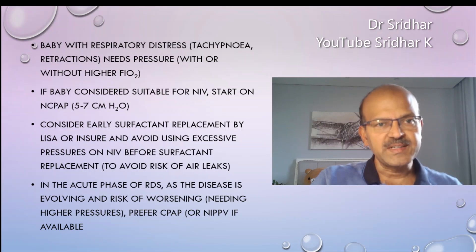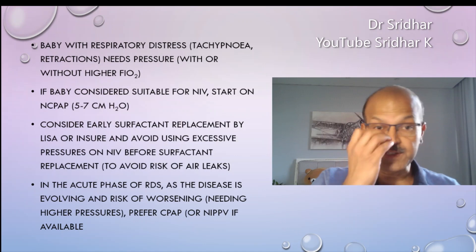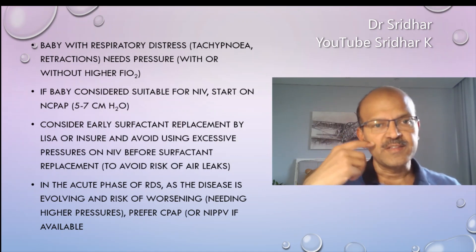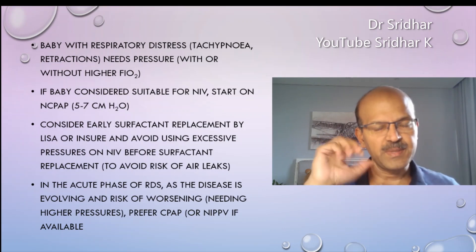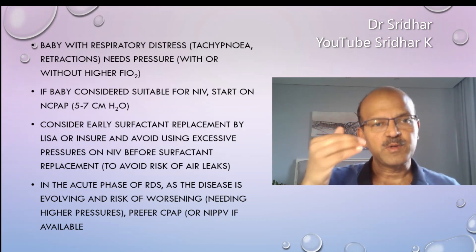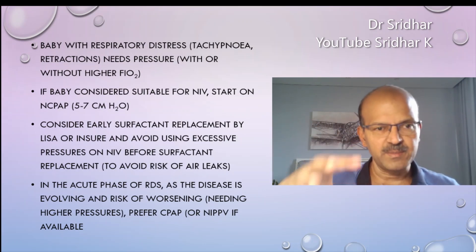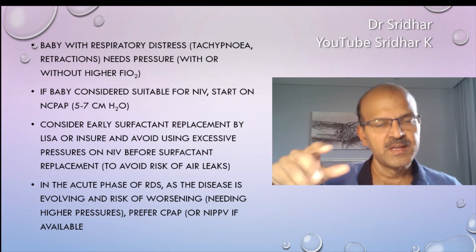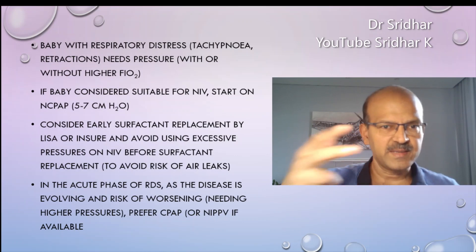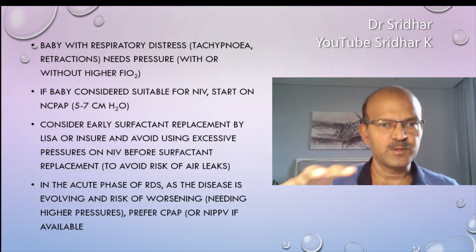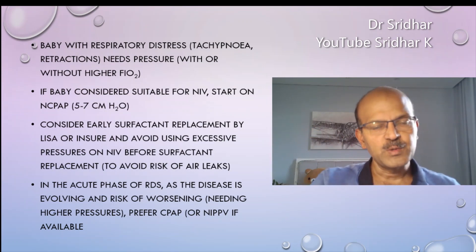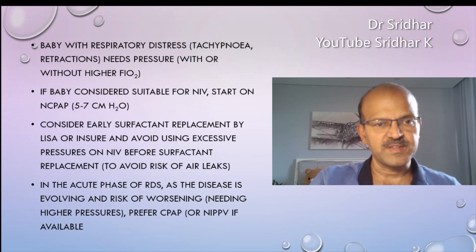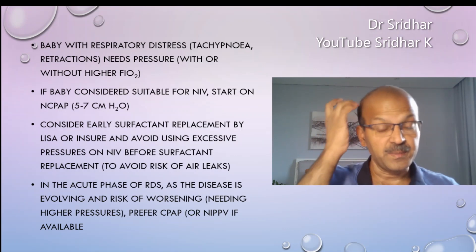The baby with respiratory distress needs pressure, with oxygen titrated as needed based on saturation via FiO2 adjustment. If the baby is suitable for non-invasive ventilation, we start with nasal CPAP of 5 to 7 cm. With RDS, you would not want to go beyond 7 cm without replacing surfactant, because the lung is stiff and higher pressures increase the risk of air leak — that is why early surfactant replacement is considered. In the acute evolving phase of RDS, CPAP or NIPPV is preferred over high flow.